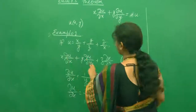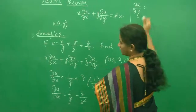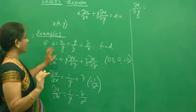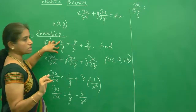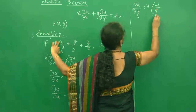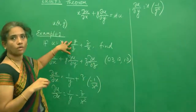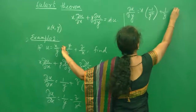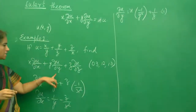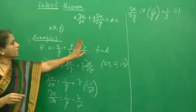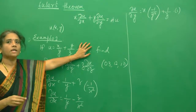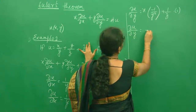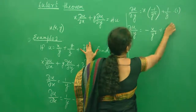Now we find ∂u/∂y. When we do ∂u/∂y, x and z are constants. For x/y, x is a constant, and 1/y derivative is minus 1/y squared. For y/z, z is a constant and the derivative of y is 1. For z/x, both z and x are constants, so its derivative is 0. Therefore, ∂u/∂y equals minus x/y squared plus 1/z.